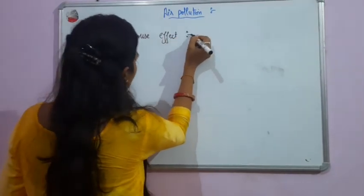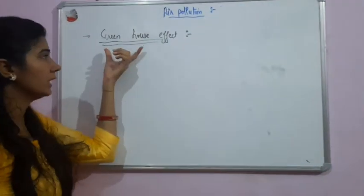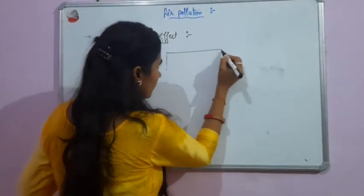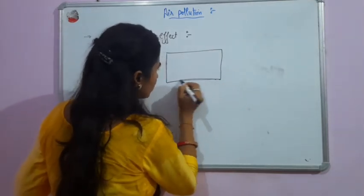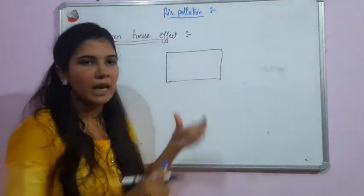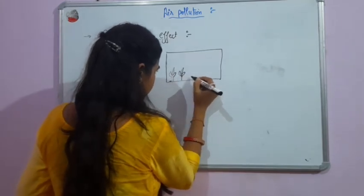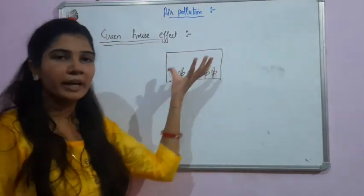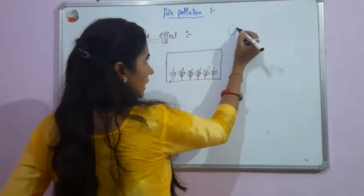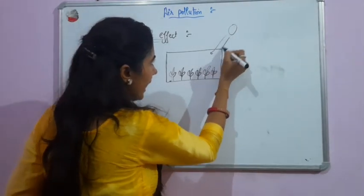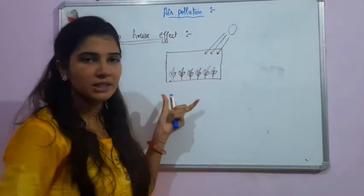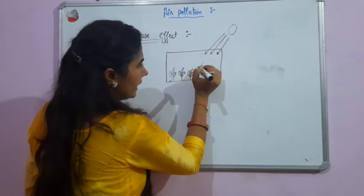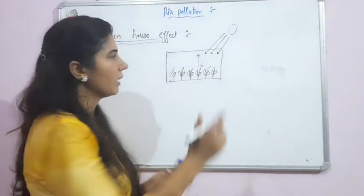Greenhouse effect — what does it mean? First, if we talk about a greenhouse, plants are being grown in glass panels. In winter season, various plants are grown inside glass coverings so that when sunlight comes in, the plants can absorb radiation.